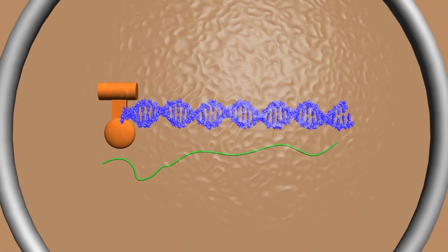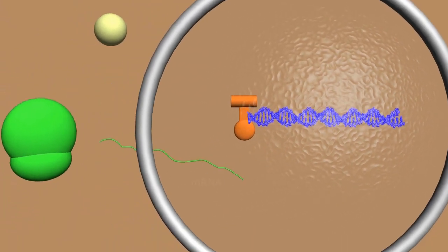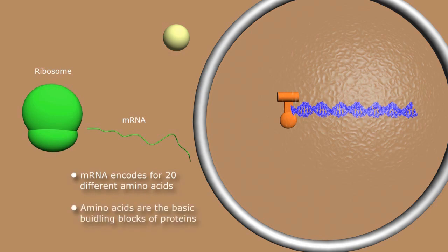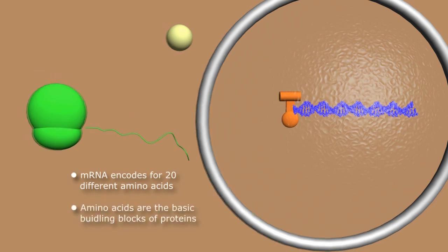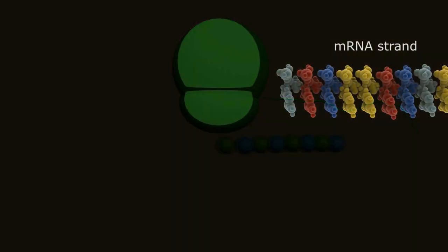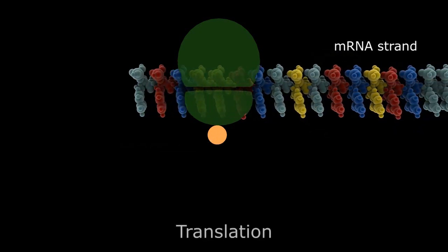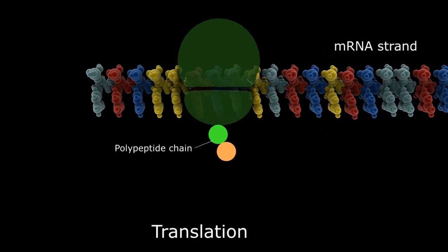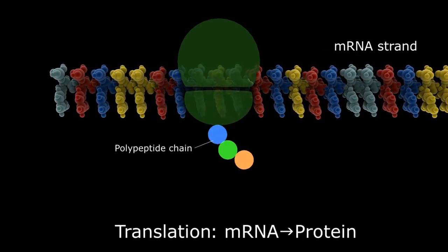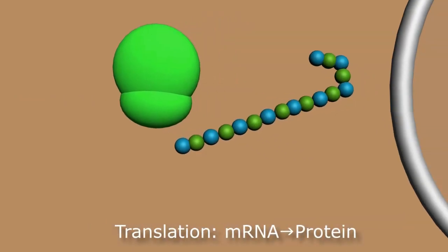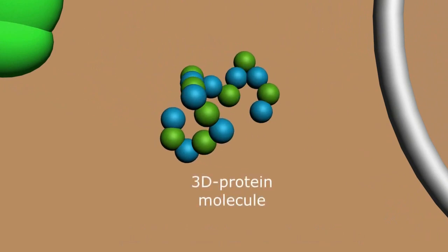This final version of mRNA then leaves the nucleus and enters the cytoplasm. The strand of messenger RNA encodes for 20 different amino acids, the basic building blocks of proteins. Specifically, every three bases encodes for one of the 20 amino acids — this grouping of three nucleotides is called a codon. The resulting linear strand of amino acids, or polypeptide chain, then folds into a complex three-dimensional structural or functional protein.